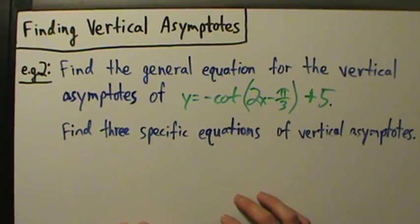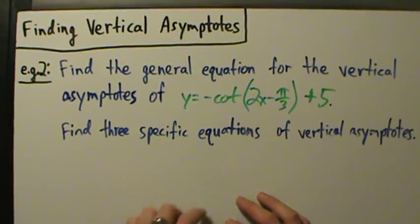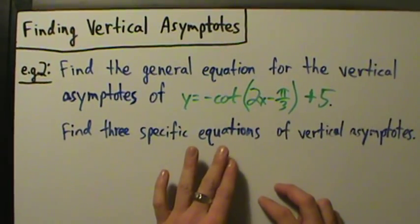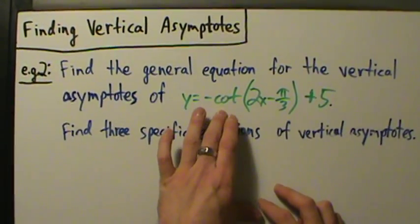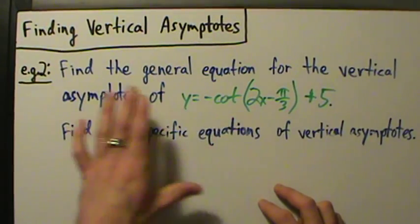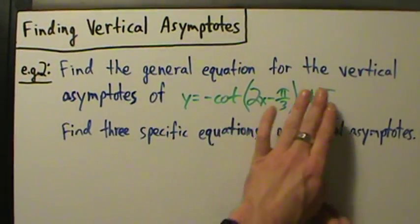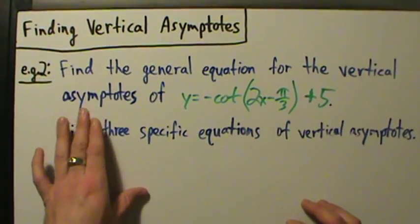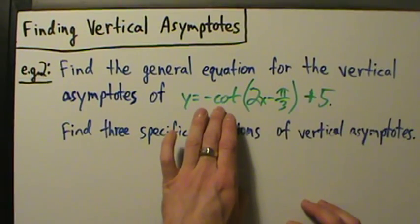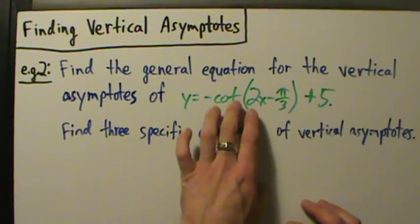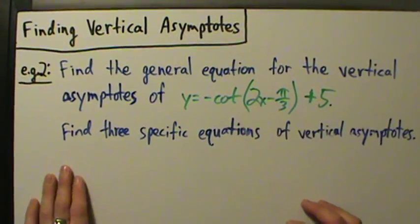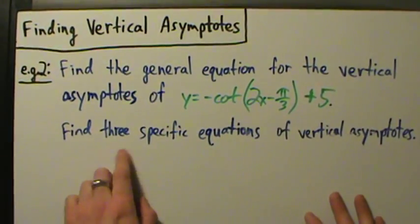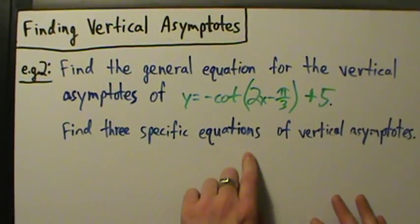Here's example 2 of finding vertical asymptotes for trig functions in general. In example 1, we did a tangent function, and in example 2 here, we're going to do a cotangent function. Find the general equation for the vertical asymptotes of y equals negative cotangent of the quantity 2x minus pi over 3, plus 5. After we do that, we're going to find three specific equations of vertical asymptotes.